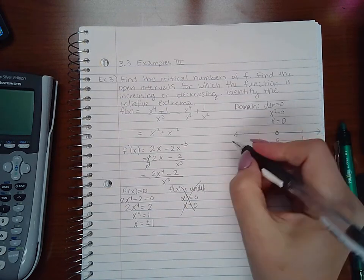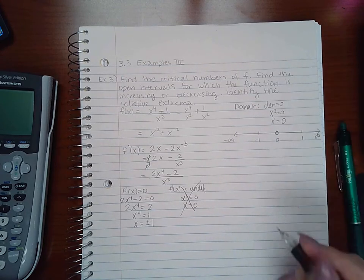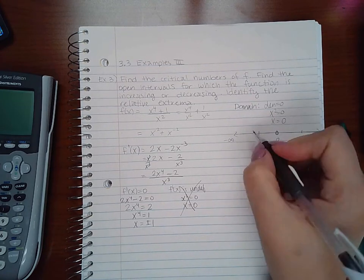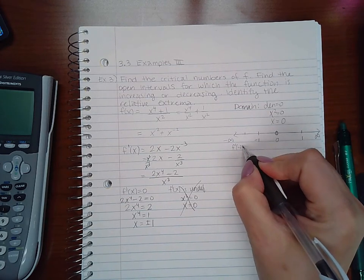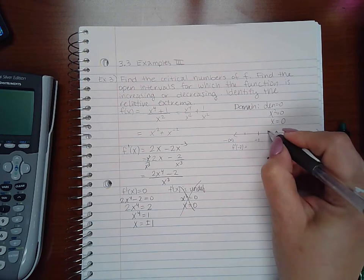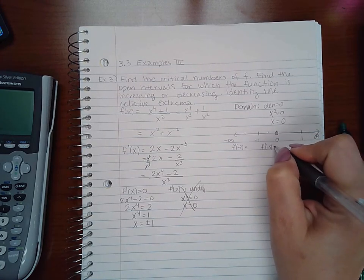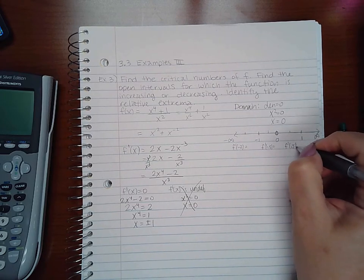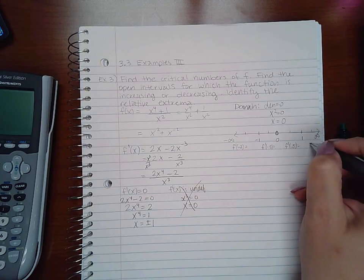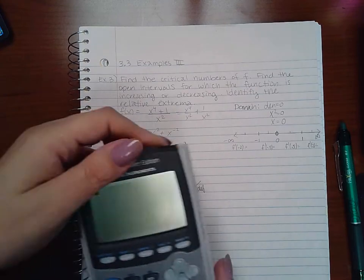The number line goes from negative infinity to positive infinity. I'll test f prime of negative 2 in the first interval, negative 0.5 in the second, positive 0.5 in the third, and positive 2 in the fourth. Let's find the signs of all these values.